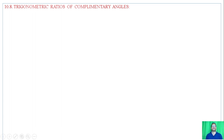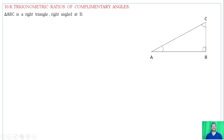Trigonometric Ratios of Complementary Angles. Complementary Angles in Trigonometric Ratios: Triangle ABC is a right triangle with right angle at B. Acute angle A. Also, A plus C is 90 degrees — in a triangle, the angles sum to 90 degrees for the non-right angles.